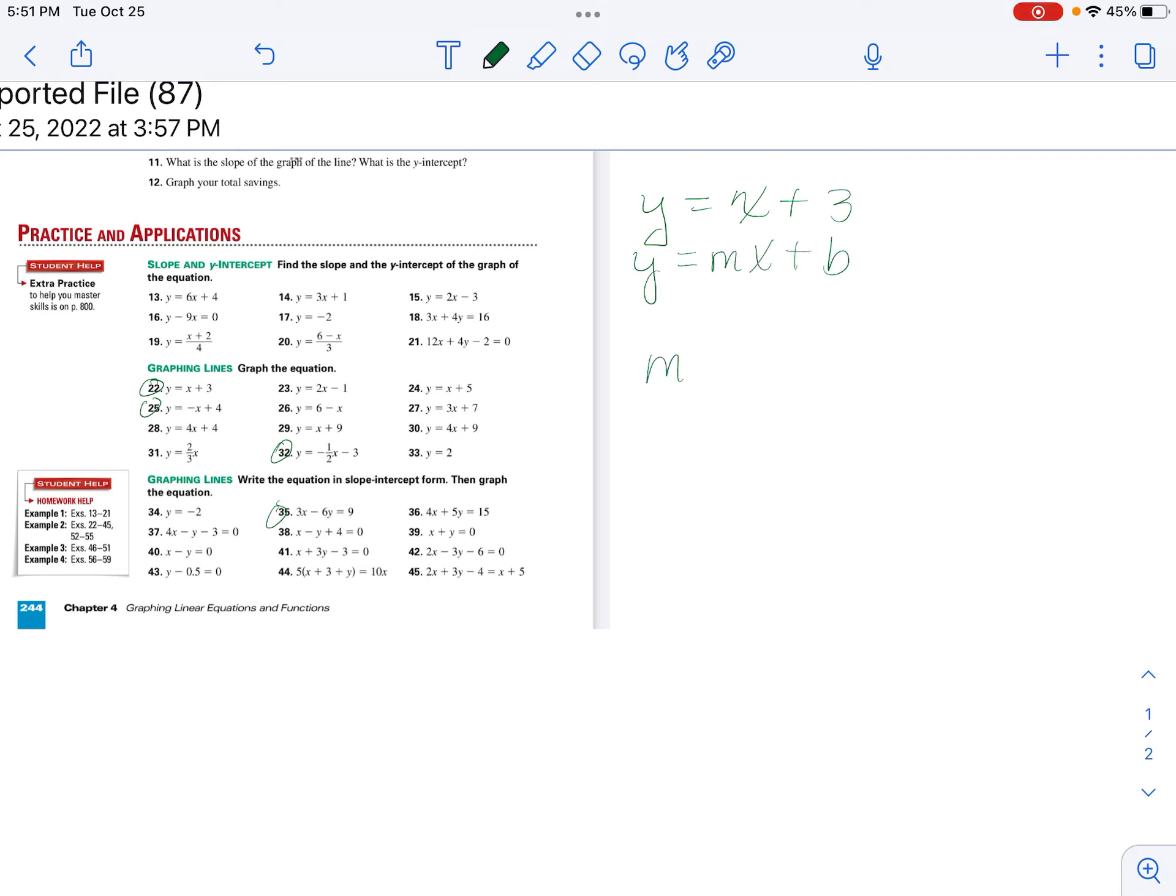So our slope is the number that's in front of the x. When there's not a number, it's assumed to be 1. Our y-intercept, which is our b, is 3.